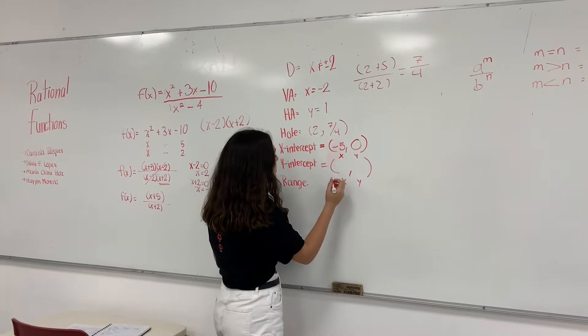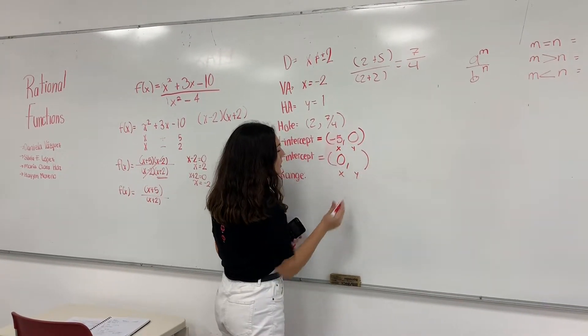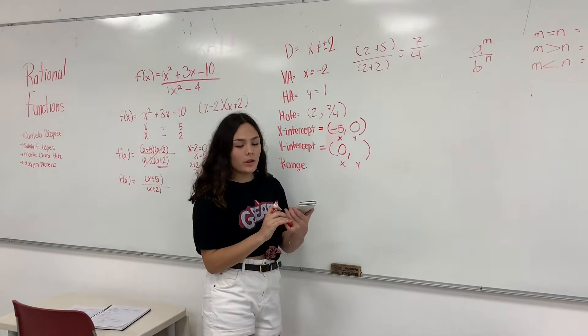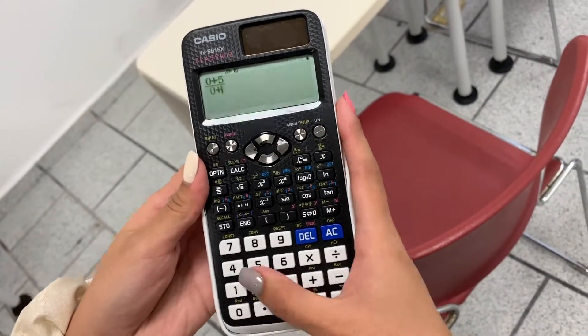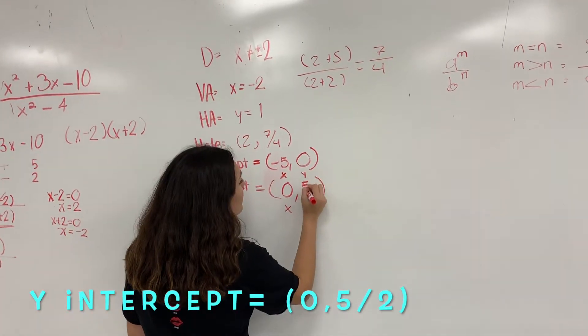For the y-intercept, you need to substitute 0 for x to find y. You can do this manually or you can do it on the calculator. The answer is 2.5.